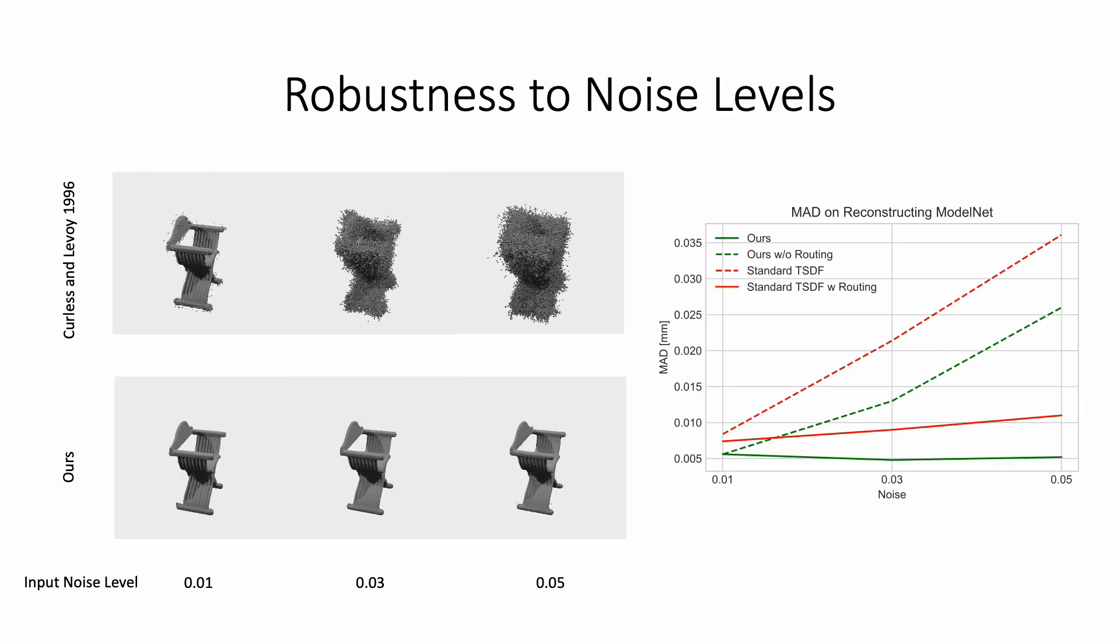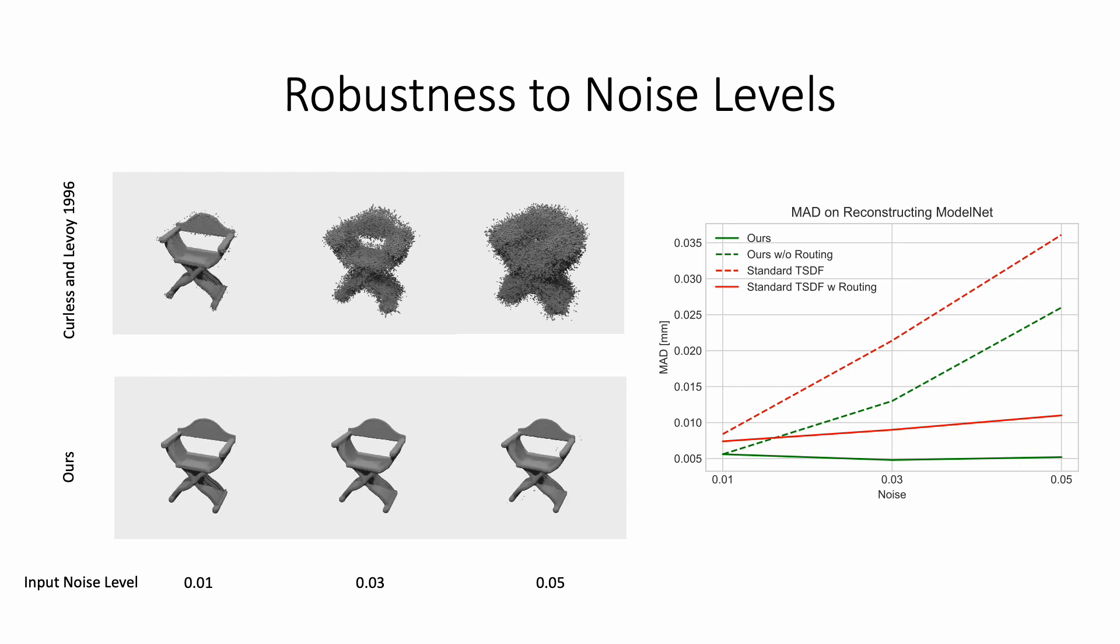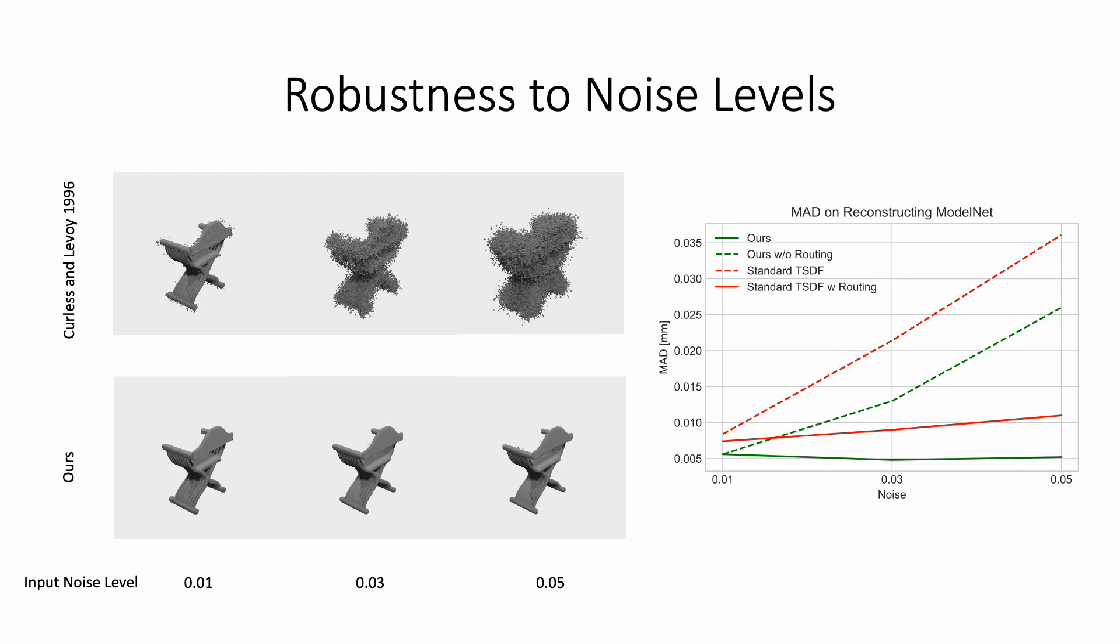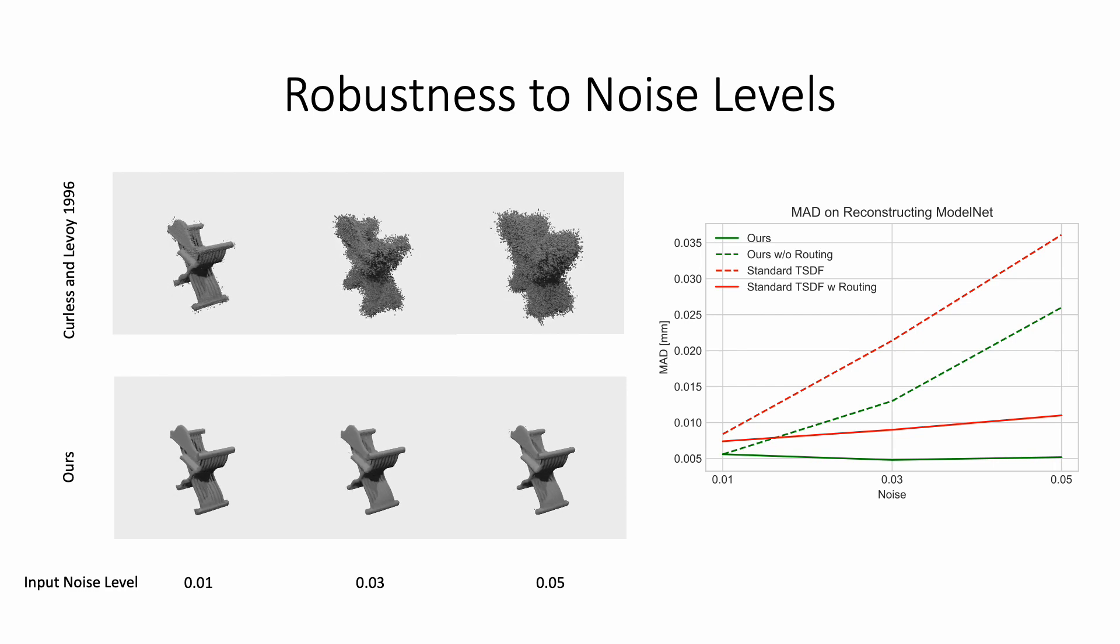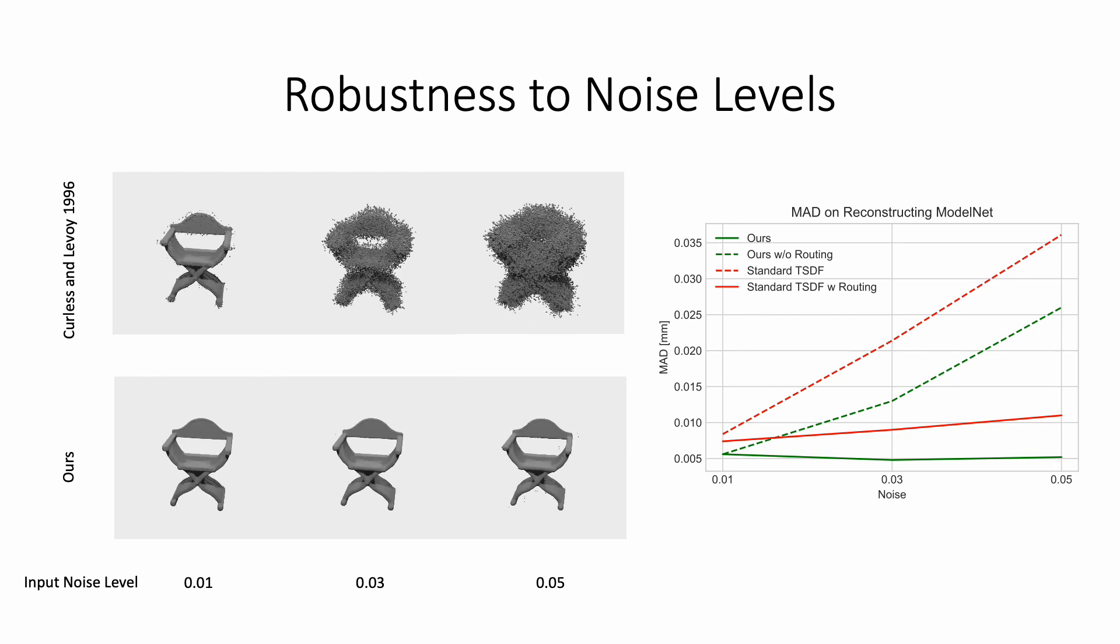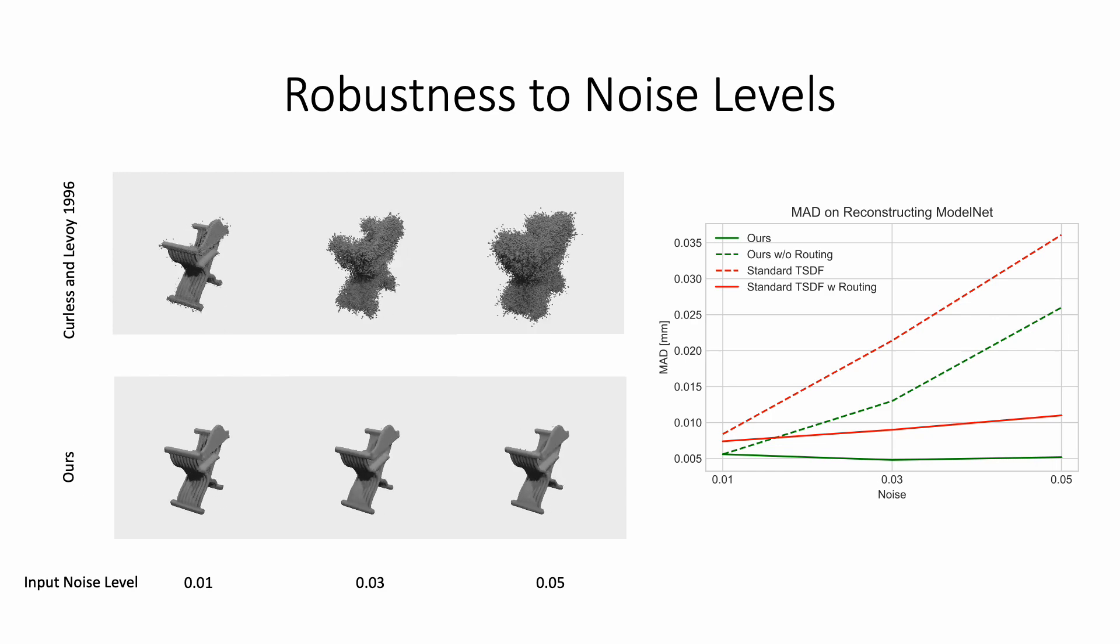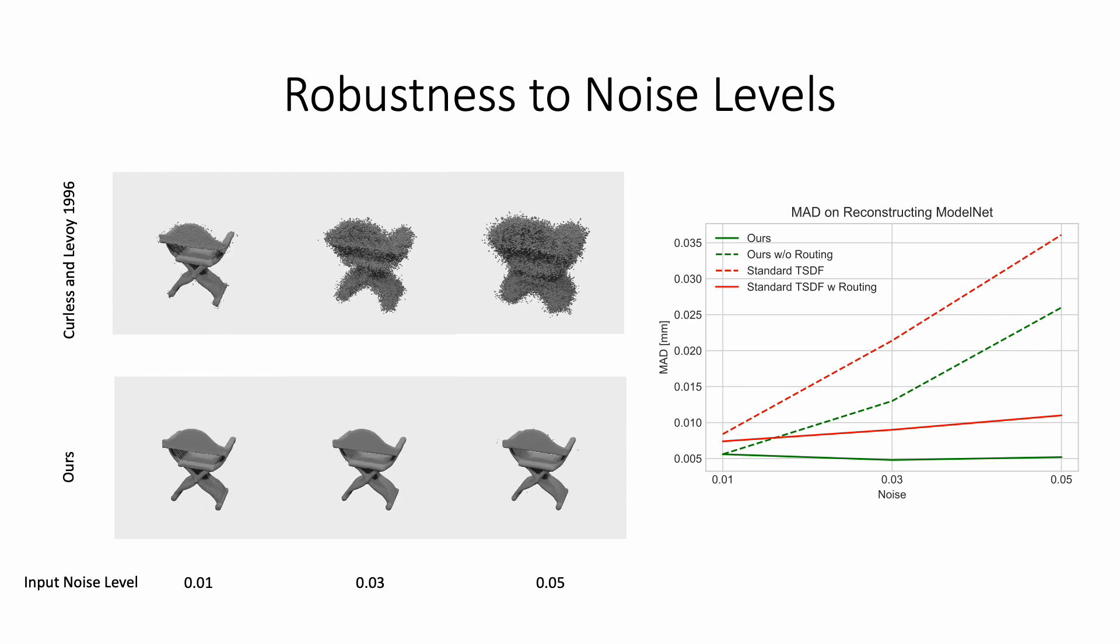In order to show the benefit of our routing network, we analyze the effect of higher noise levels on the performance. There, it can be seen that our method can significantly better handle higher noise levels due to the robustness introduced by the routing network.